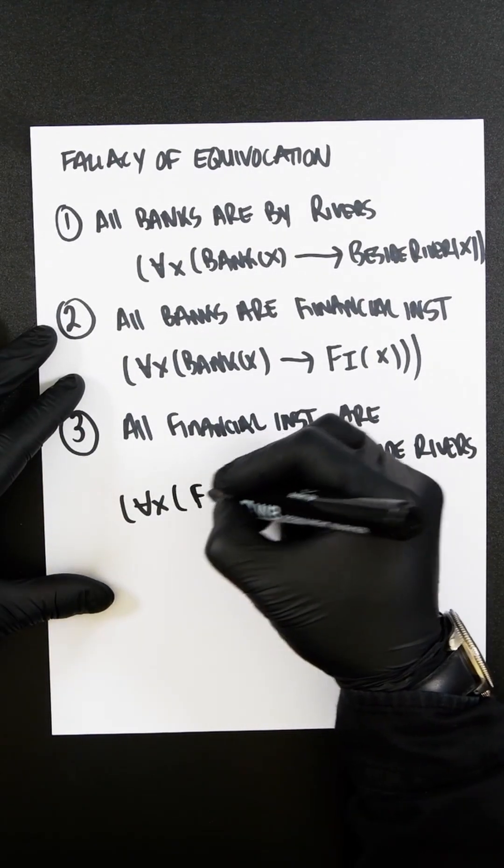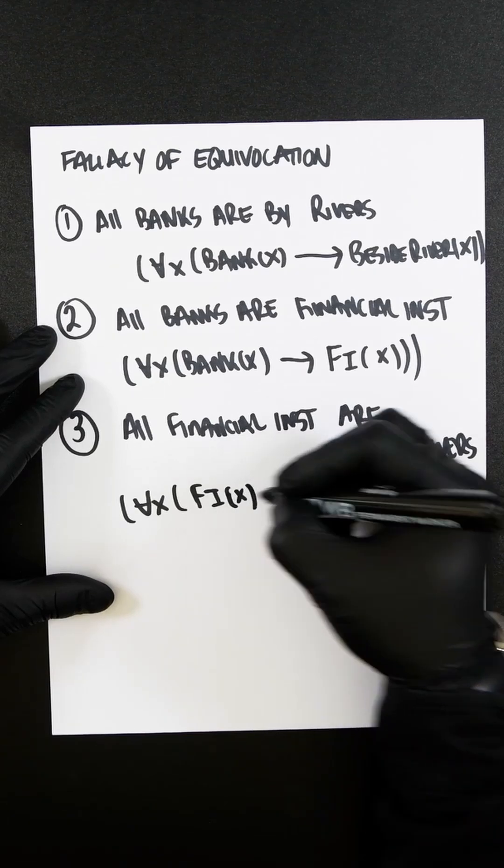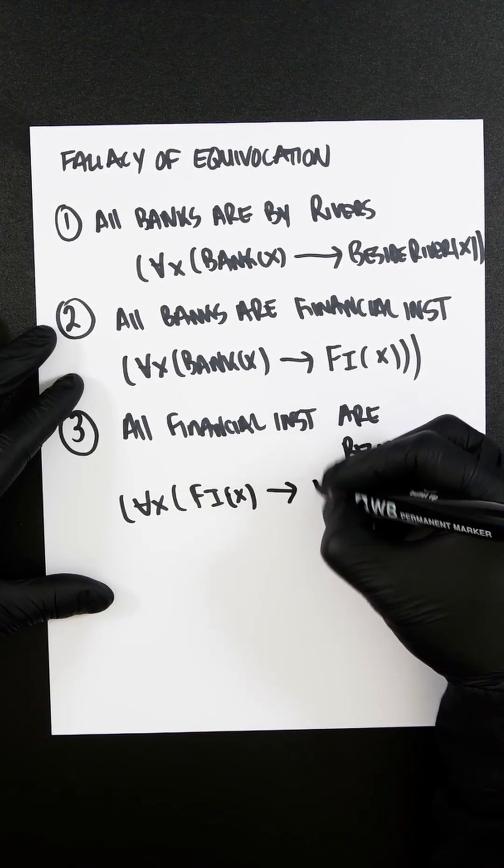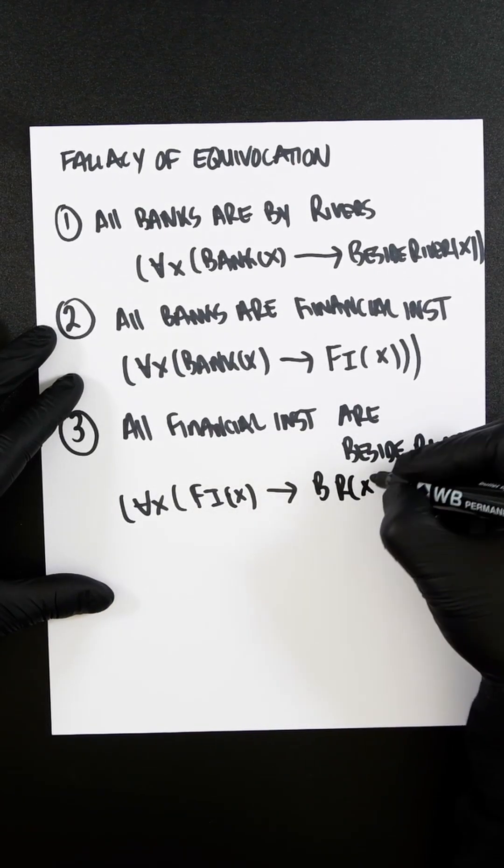that's going to be for all x, financial institutions x, and let's say beside river x.